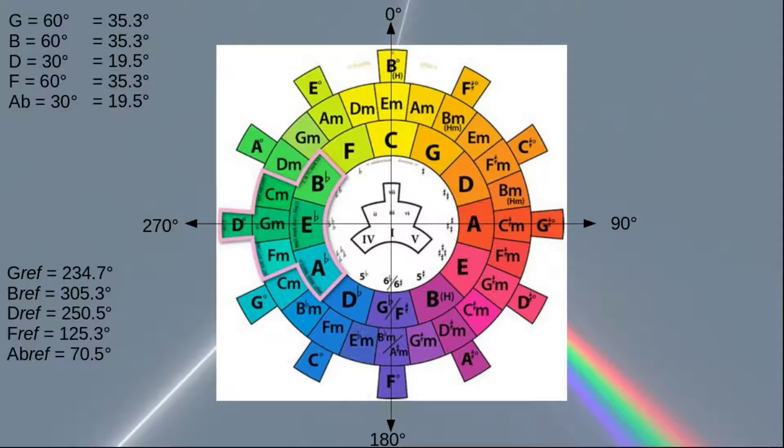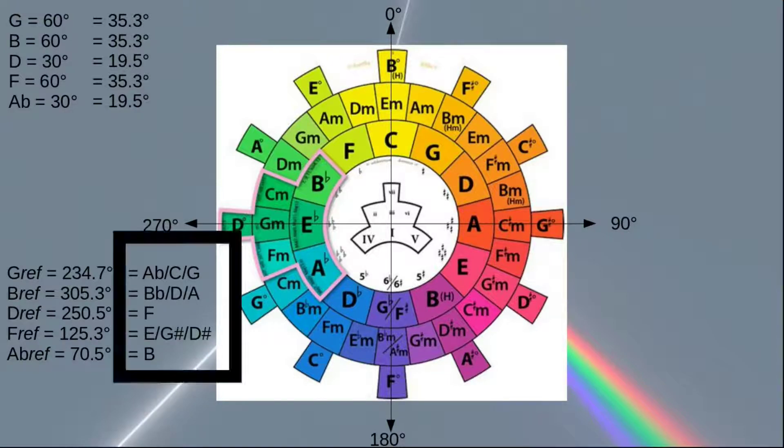Now we can translate those angles into notes. For example, the refraction of G will be at 235 degrees on the wheel, which is where we have the light blue A-flat, G, and C. Now we have to figure out how to arrange these notes. If we look at all of the notes we could use, we have almost each note possible in the chromatic scale.